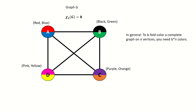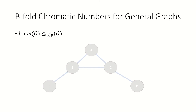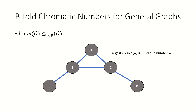In general, if we want to b-fold color a complete graph on n vertices, we'll need at least b times n colors, meaning that the b-fold chromatic number of a complete graph with n vertices is bn. Now what can we say about the b-fold chromatic number of any arbitrary graph g? Well, for one, we know it has to be at least b times the clique number of the graph, represented by omega of g. Remember that the clique number is the size of the largest clique in the graph. The reason the b-fold chromatic number is at least b times omega of g is that as we go about coloring the entire graph g, we'd have to use that many colors just to b-fold color the subgraph of g that is its largest clique. For example, the largest clique in this graph is a, b, c — a three-clique.